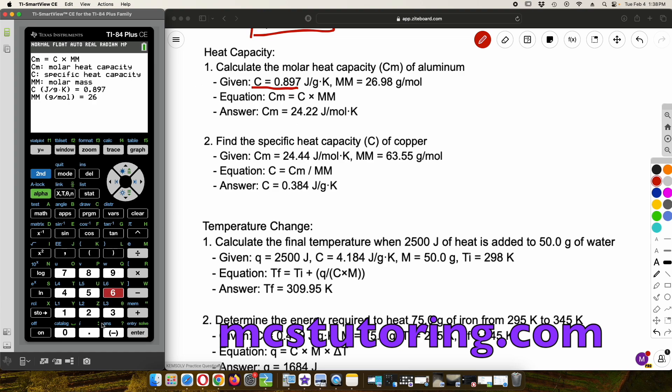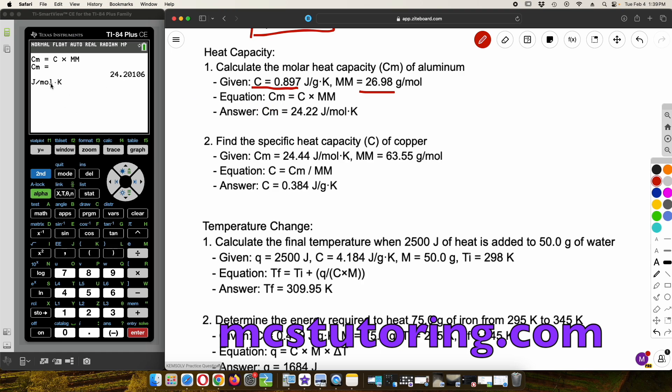Let's enter that 26. Oh, sorry. 26.98. Look at me. Here I am telling you to be careful. I'm not being careful myself. 26.98. And the cool thing is we've got the equation here. CM equals C times MM. And then we get 24.2. Oh, my gosh. Look at that. Joules per mole Kelvin. And we're going to say it's close enough. The 24.2 and the 24.22.